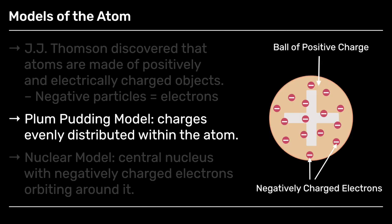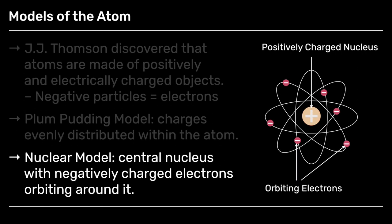One of them, called the plum pudding model, plum puddings were more popular back then, was that the electric and positive charges were just evenly distributed, much like plums inside a pudding. Or something which became known as the nuclear model, where you'd have a central nucleus, much like a sun with the negatively charged objects orbiting around it, like the planets. That was called the nuclear model. And with these two competing ideas, it came down to experiment to work out how you could tell them apart.